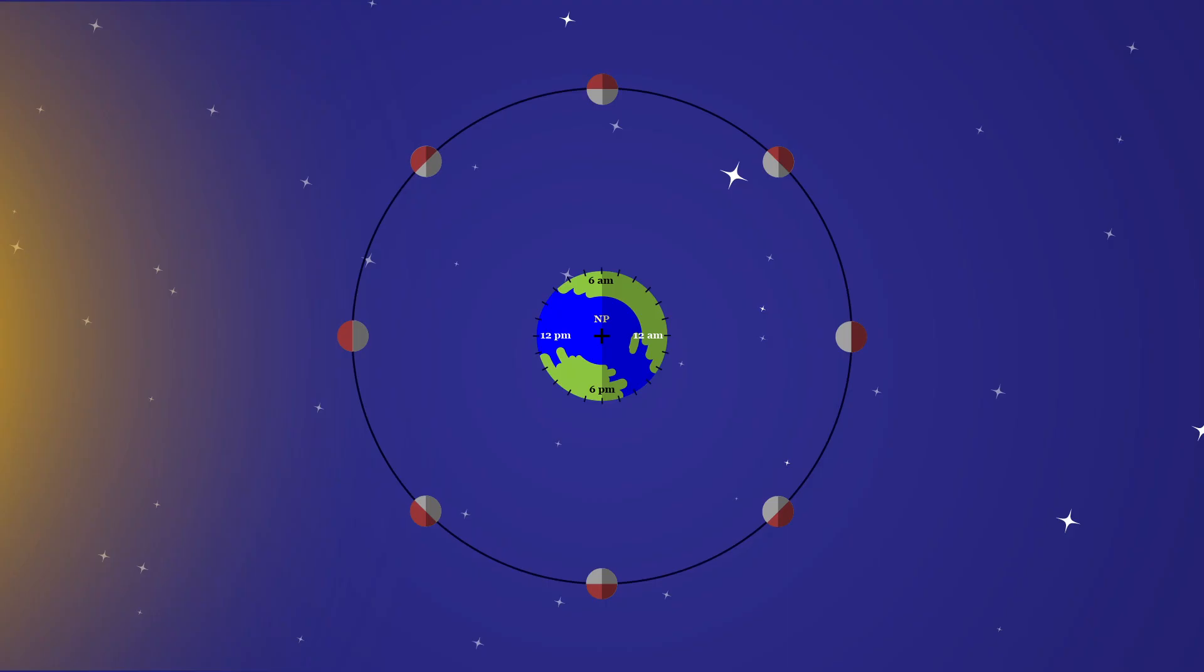We return to our view of the lunar orbit from the north celestial pole. Note the time zones on Earth and draw on a tangent plane at the 10:30 p.m. observer's time zone.